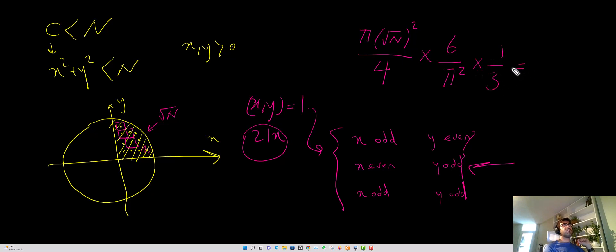And if you simplify this friend you have 6 here, 3 here, 4 here and pi n over 2 pi squared which is what you are looking for n over 2 pi. And that was it.